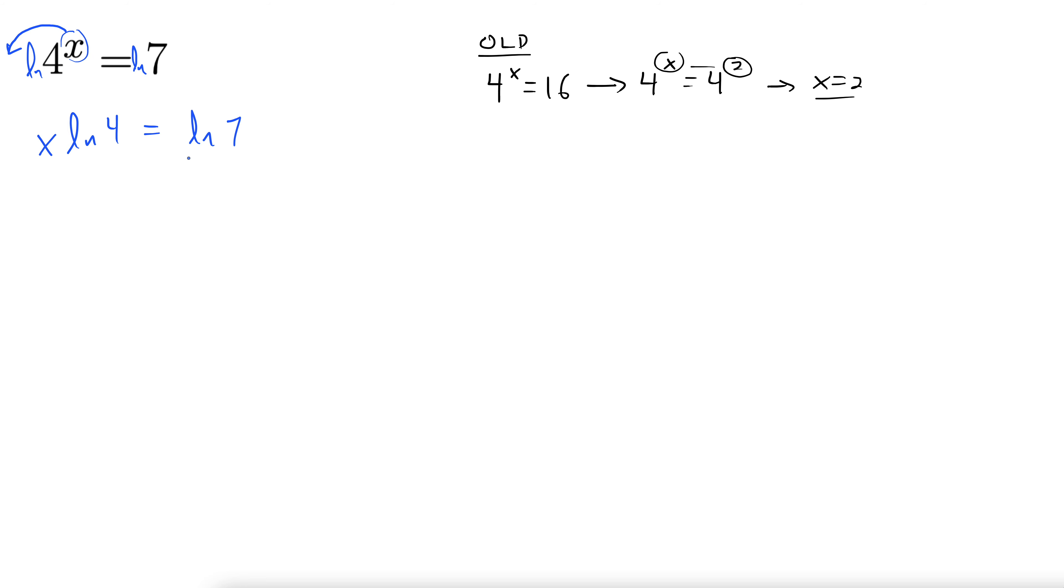Now natural log of 4 and natural log of 7 are just numbers, so treat them like numbers, no different than 5 or 3. Divide both sides by natural log of 4, and that tells us x equals natural log of 7 over natural log of 4.